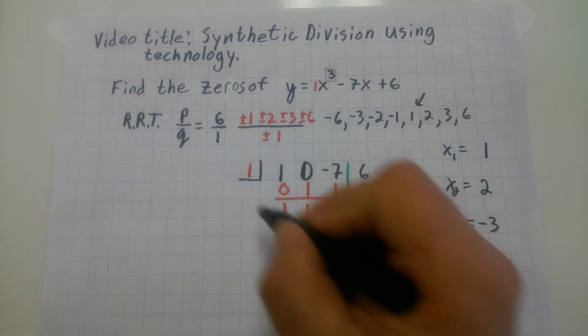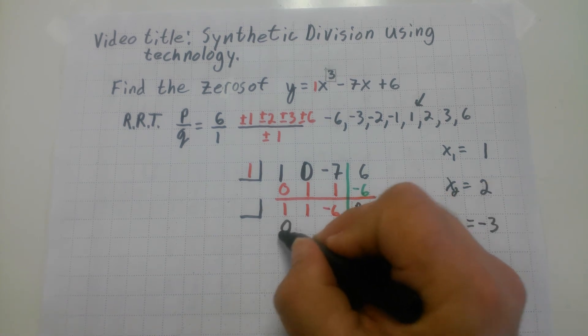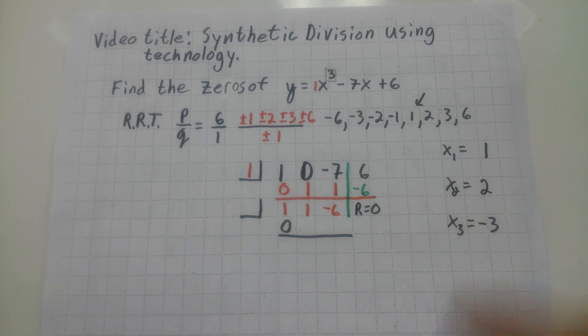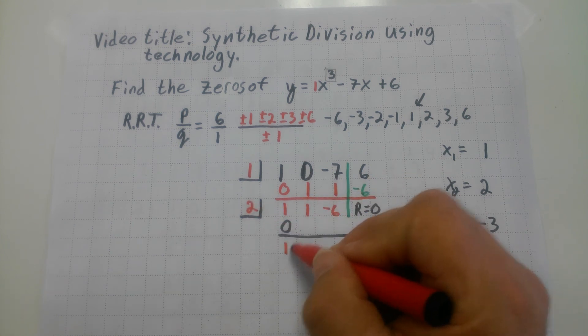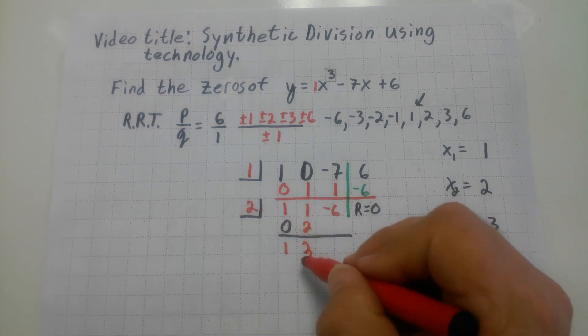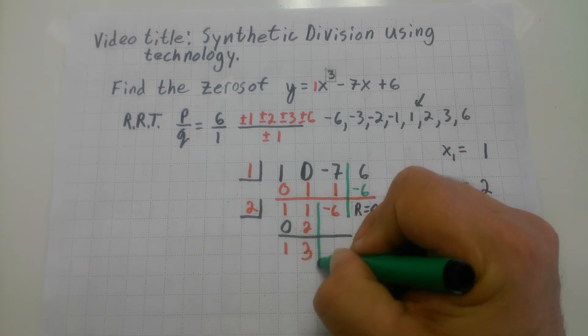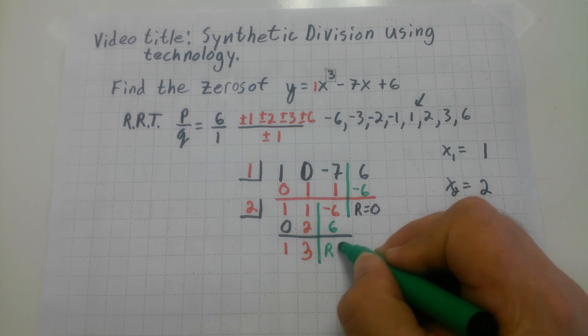I'm going to keep going. I'm going to, again, use synthetic division to show, to prove that two is the next solution. So, I put my two over here. What's one plus zero? One. What's two times one? Two. What's one plus two? Whoops. Three. I almost said it was two. What's two times three? Well, two times three is positive six. And that gives me a remainder of zero.